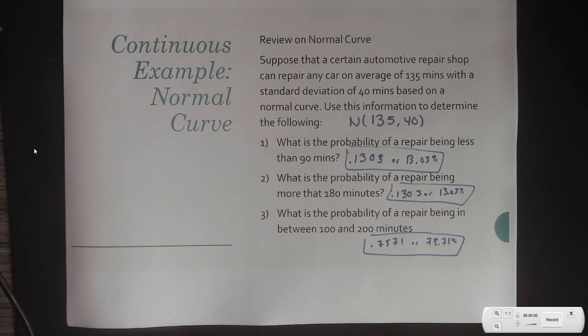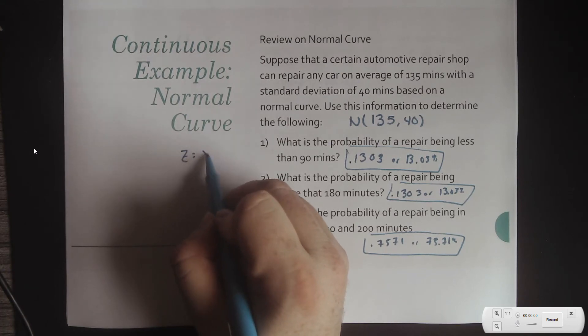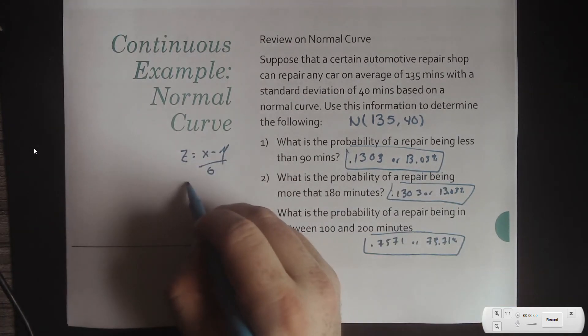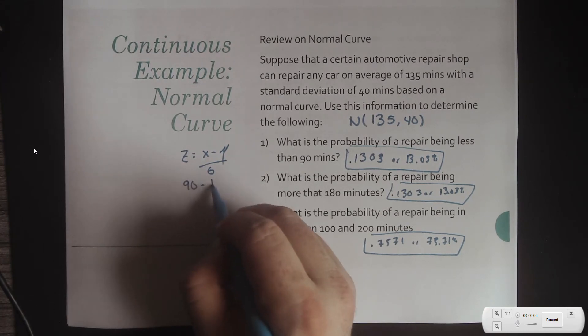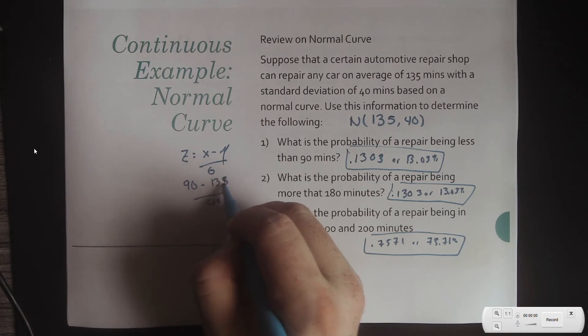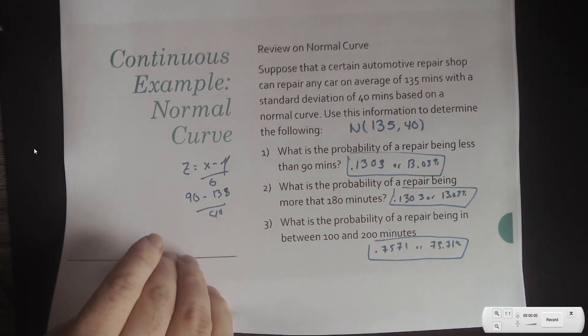So, that's kind of our review of normal curve. If you do it by hand, then you would just need this formula here, which would correspond to the first one would be 90 minus 135 over 40.